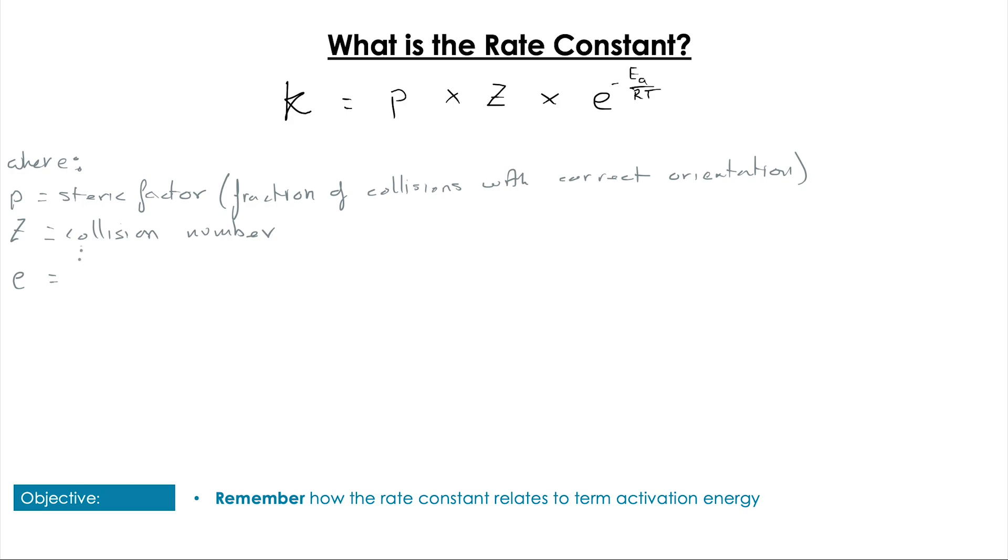P here is representing a steric factor or the fraction of collisions with the correct orientation. Z represents the number of collisions. e is of course the base of natural logarithms, Ea the activation energy, R is the universal gas constant, and T is the temperature in Kelvin.